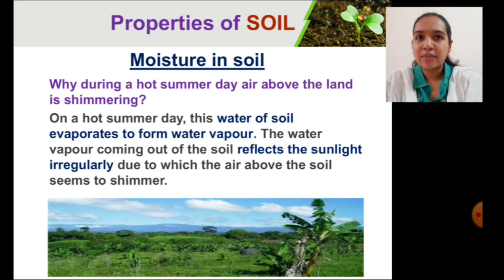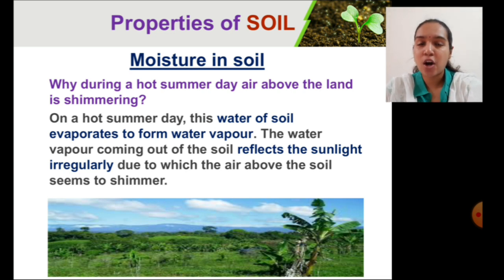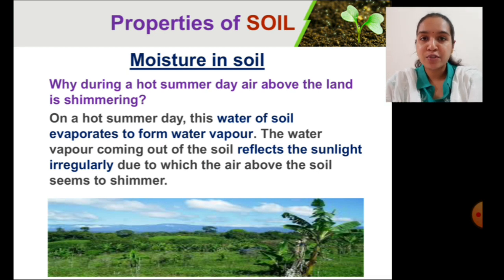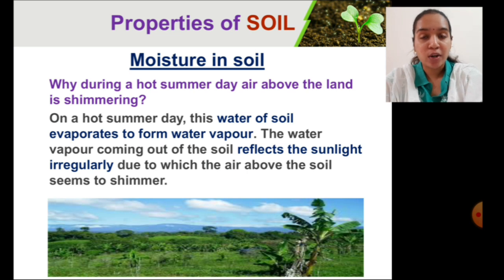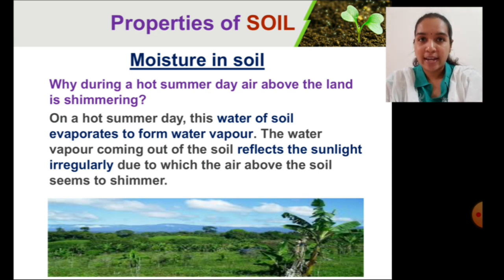Have you ever wondered why the land shimmers during a hot sunny day? It is because the water in the soil evaporates to form water vapour. You may have already learned about the water cycle and know what evaporation, condensation, and precipitation are. That is why the land and the air seem to be shimmering during summer.